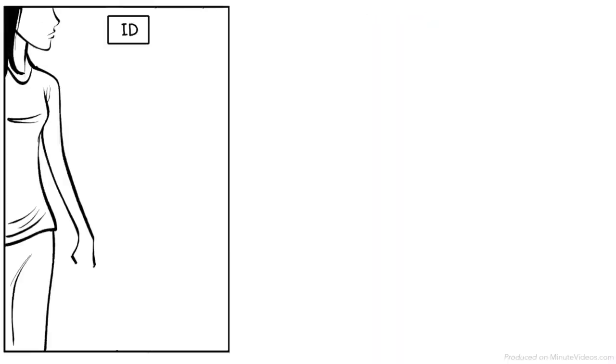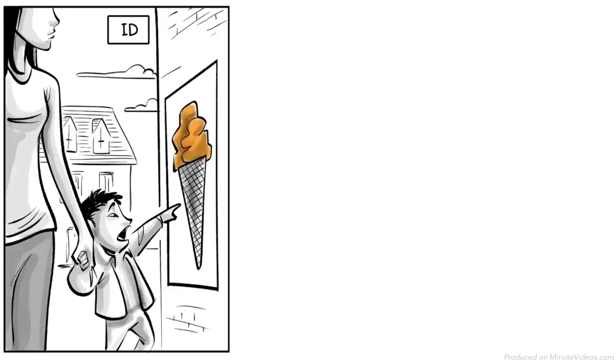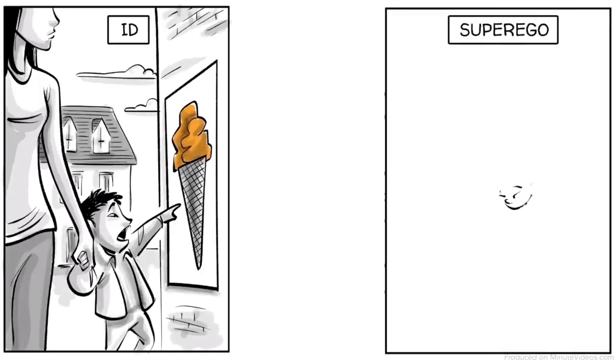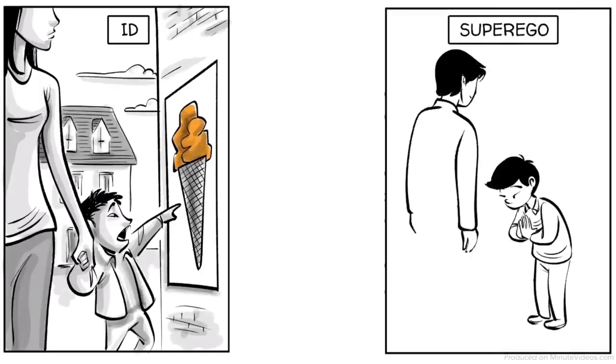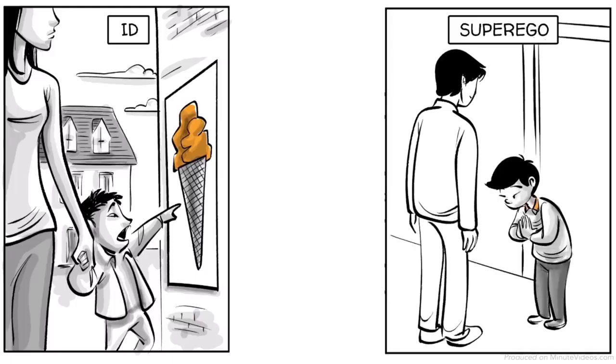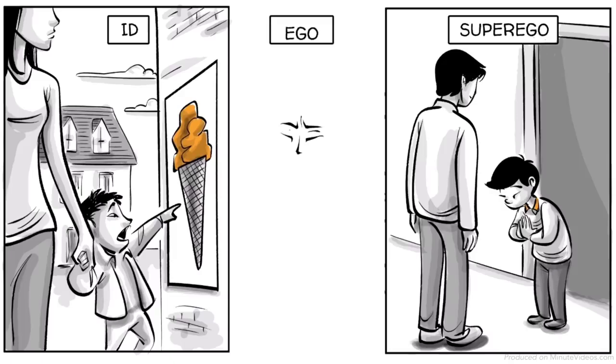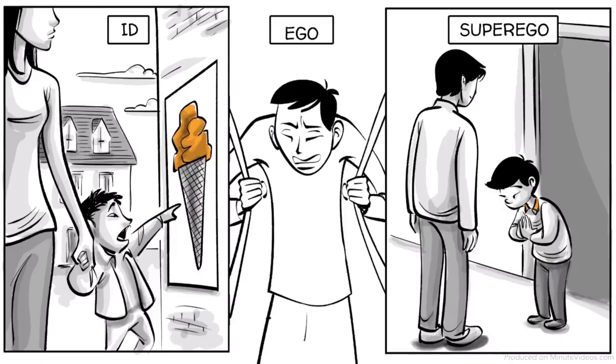Young children are driven by the id and demand immediate satisfaction. At around age seven, we begin to develop a super ego and want to become good moral citizens and please others. The ego is formed with adolescence to balance the two forces.